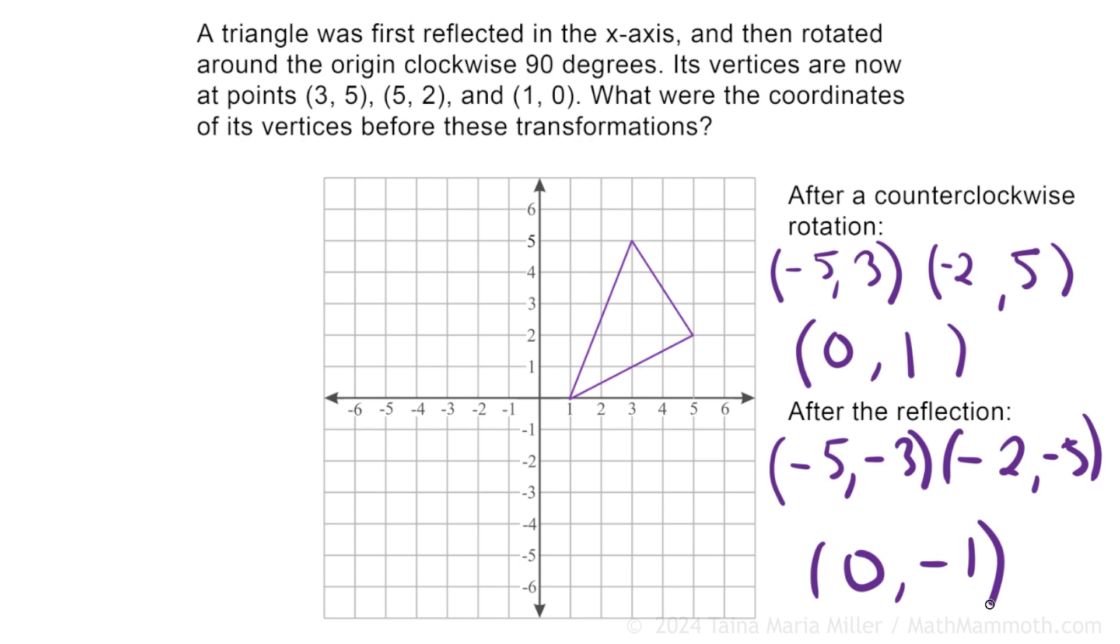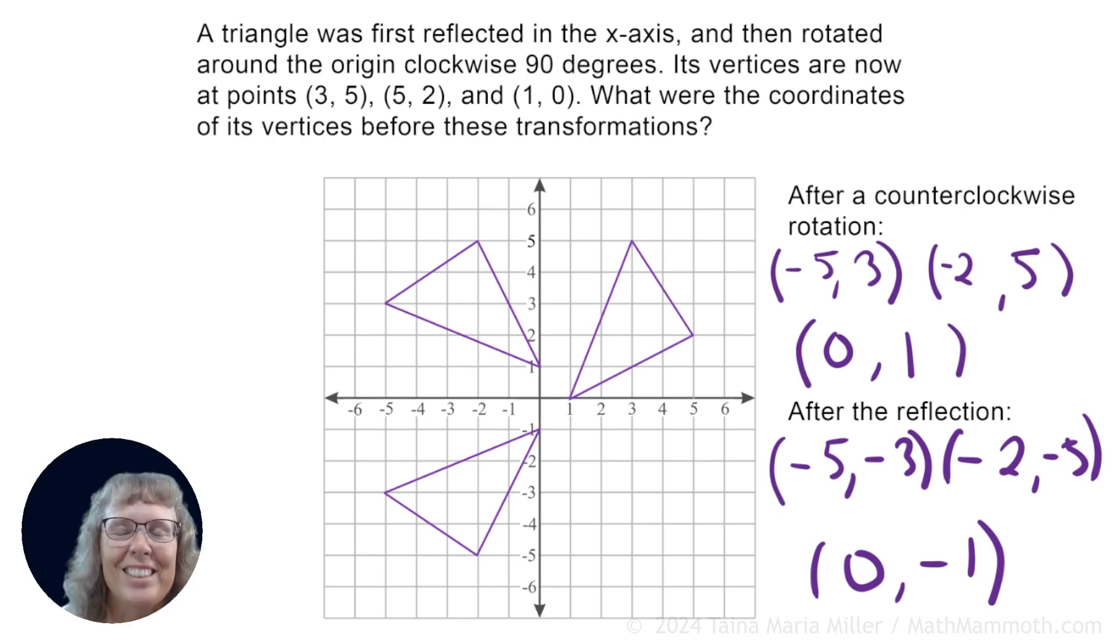Okay, now let's check our work. After the rotation, the triangle would have been here. We have negative 5, 3, 0, 1, and then negative 2, 5. All is correct. And the original triangle over here, we have negative 5, negative 3, negative 2, negative 5, and then 0, negative 1. So yes, everything is correct. And we're all done with this one.